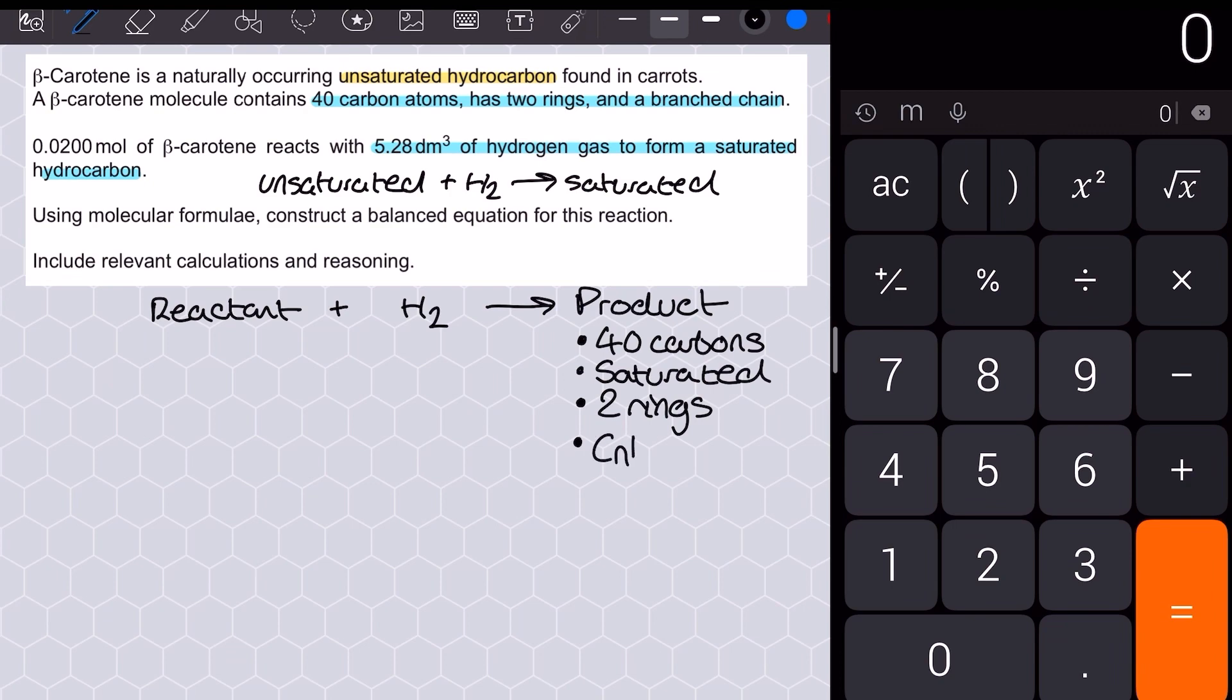The two rings do, however. What they do is reduce the number of total hydrogens available on the saturated product by two each time. Think about the difference between pentane and cyclopentane. It's two hydrogens, right?